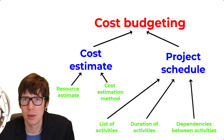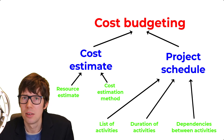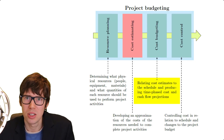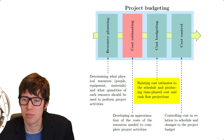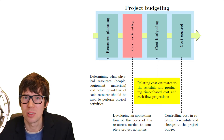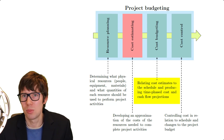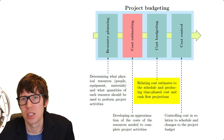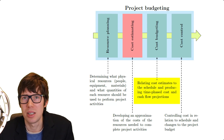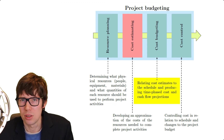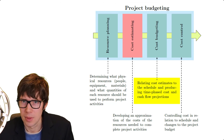Once you have those three inputs, you can create the schedule. And once you have the schedule, you can combine it with the cost estimate. The cost estimate tells you how much the project is going to cost, and the cost budget tells you how much money you're going to spend at each particular moment in time during the project execution phase.